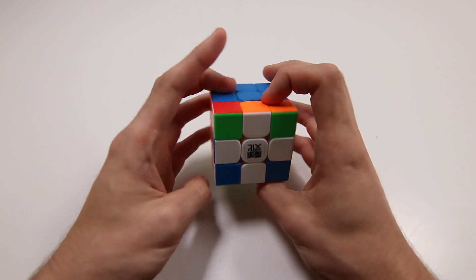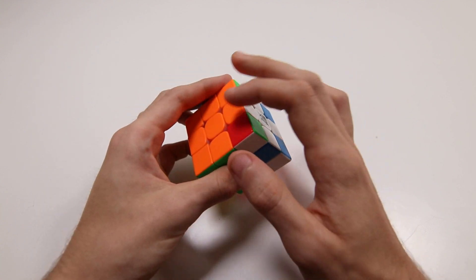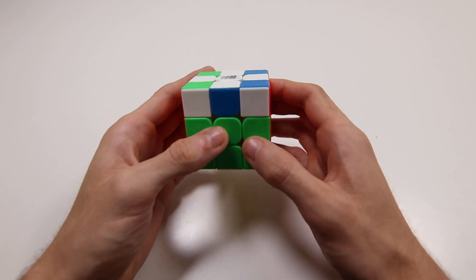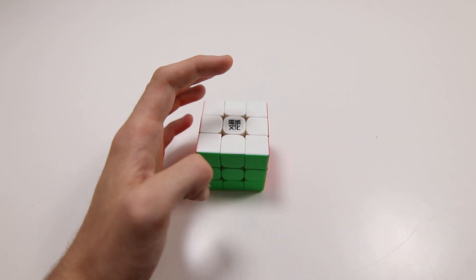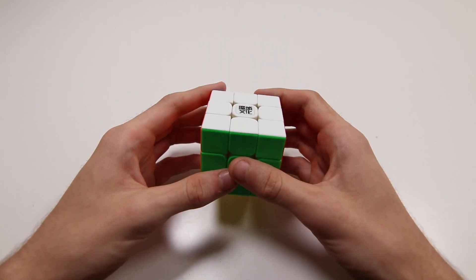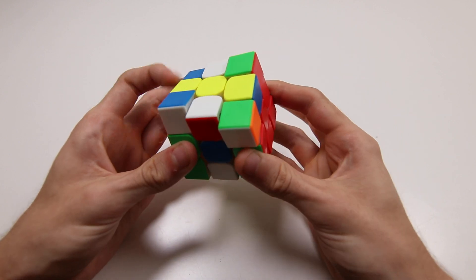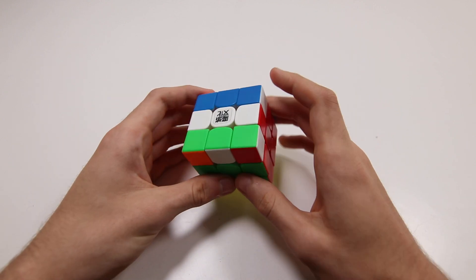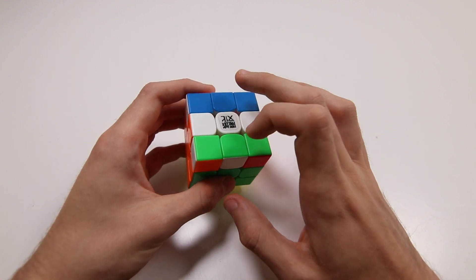And no matter what, the worst case you're going to get is this H2 GLL where you have to do a 15 mover like this and most of the time you're going to be able to get something that is solvable with an 11 mover. So that is the first idea and I'll show a similar example.